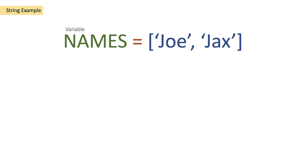Hi and welcome to another video by me, Flow Joe. Today we are going to be looking at the JSON function on Power Automate. What we're going to do is start with a variable of names and create a string variable which is going to contain an array of Joe and Jax.